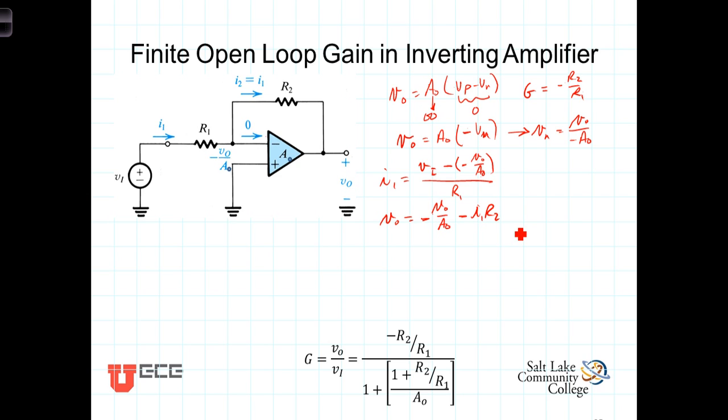Now, let's go ahead and substitute in the expression for I1. We have then V0 is equal to negative V0 over A0 minus, now I2, or I1 rather, is this expression right there. So minus R2 times I1, which is VN minus a minus is a plus V0 over A0 divided by R1.